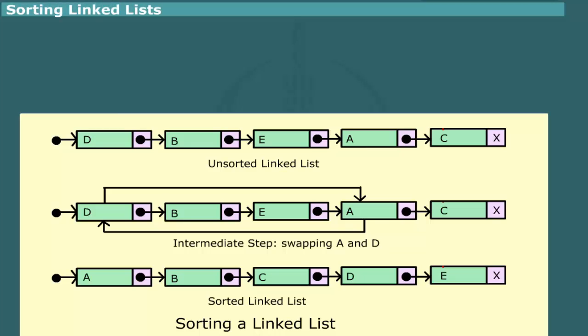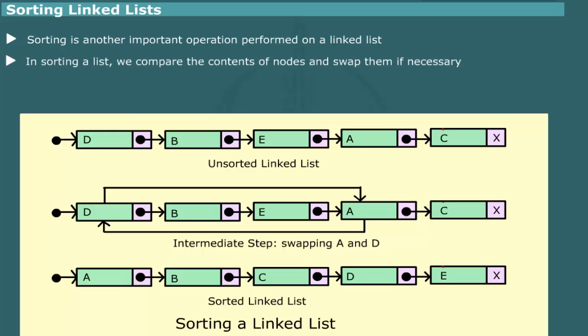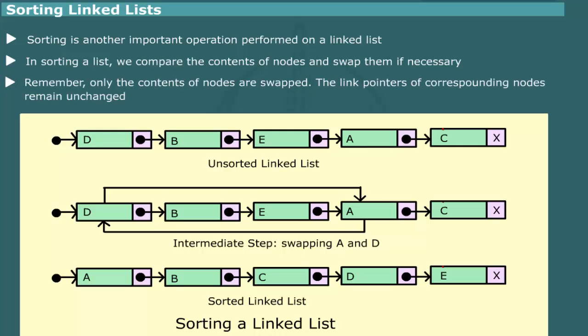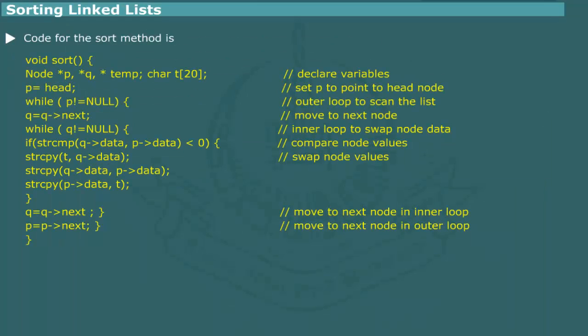Sorting a linked list. Sorting is another important operation which is sometimes required on a linked list. In order to sort a list, we systematically compare the contents of a pair of nodes and swap them, if necessary, to bring them into the given order. The important point to note is that only the information fields of the nodes are exchanged; the link pointers of the corresponding nodes remain undisturbed. Figure lists the code for the sort method. Two node pointers, P and Q, are used to identify a pair of nodes. A nested loop performs comparisons and swaps elements to bring node values into ascending order. A temporary array T is used to hold a data value to be swapped.